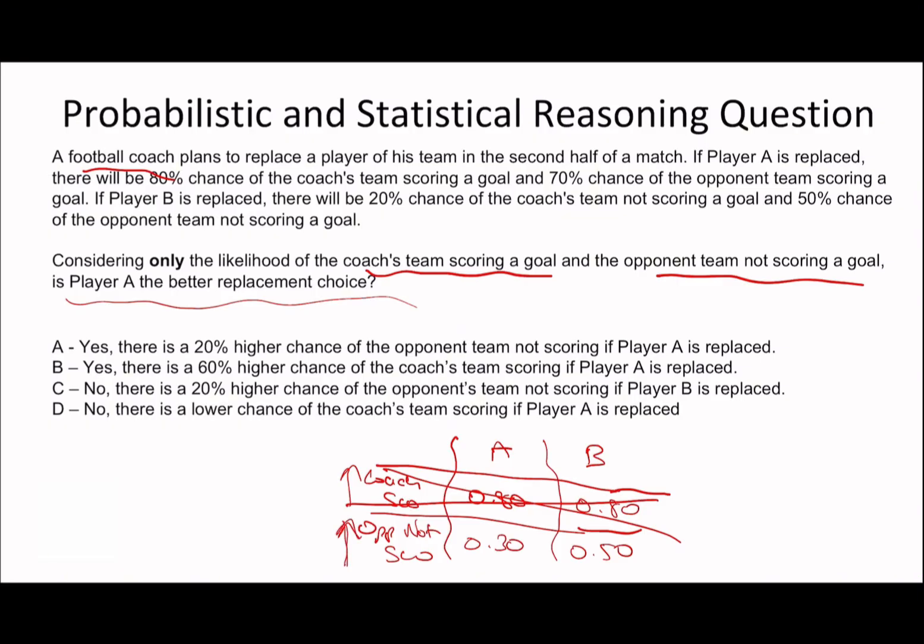So is player A the better replacement choice? Remember, we want the probability to be as high as possible. I would look at my diagram, my table, and I would say, no, I want player B. So I'd say no. So that rules out A and B. And then let's look at C and D. So D says there's a lower chance of the coach's team scoring. We know that the answer has nothing to do with the coach's team scoring. So therefore, it has to be C and C makes sense.